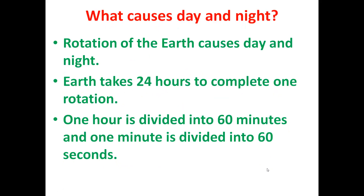What causes day and night? The rotation of the earth causes day and night. The earth takes 24 hours to complete one rotation. One hour is divided into 60 minutes, and one minute is divided into 60 seconds.